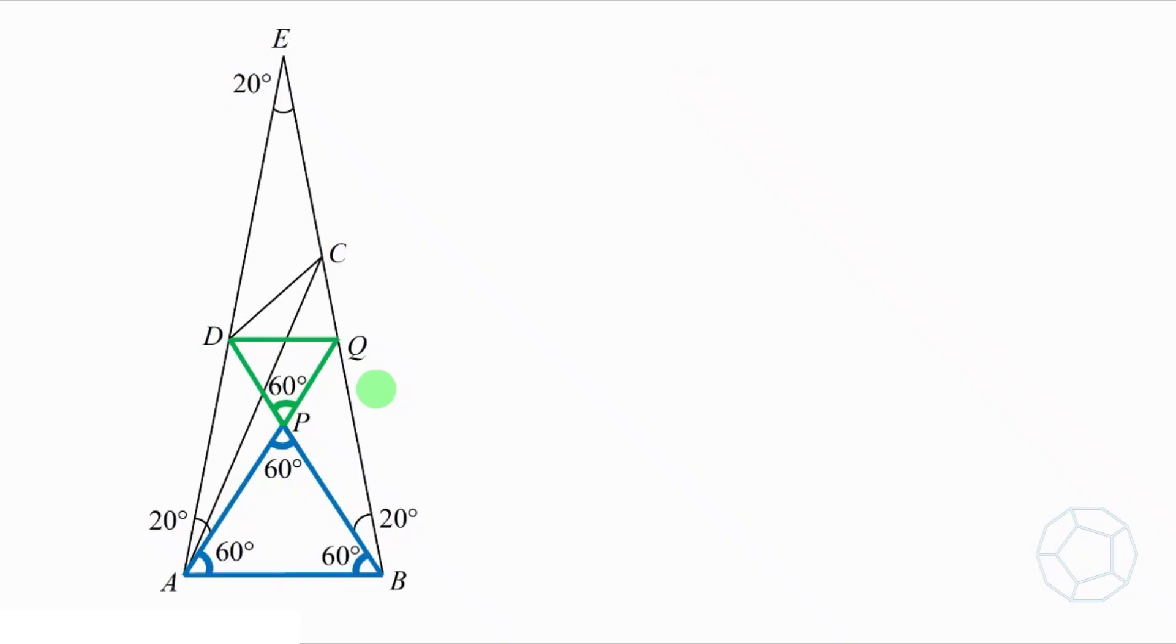In the final part, we shall obtain another equilateral triangle. Let's focus on the green triangle DPQ. By vertically opposite angles, angle DPQ and angle APB are both 60 degrees. Next, let's look at the sides.